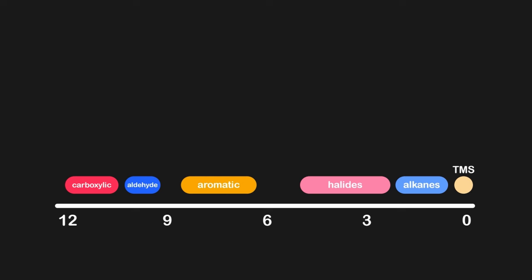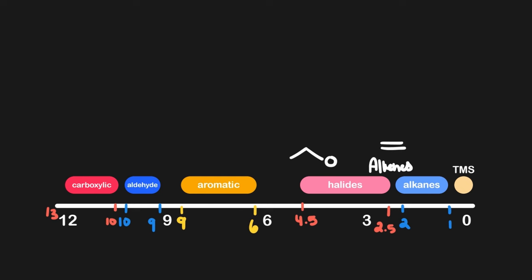As for which specific shifts you should know: alkanes generally show up around 1–2 ppm. Halides tend to range from 2.5 to 4.5 ppm. Aromatic hydrogens shift considerably more due to unsaturation, appearing around 6–9 ppm. Aldehydes are around 9–10 ppm, and carboxylic acids are the most shifted group, ranging from 10–13 ppm. We can use these benchmarks to estimate other groups — for example, alkenes would be a bit more shifted than alkanes, and hydrogens near oxygen would shift similarly to halides. This conceptual understanding is more important than memorizing a full list.